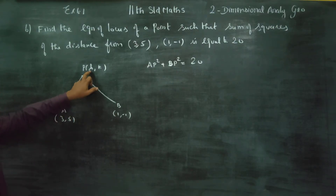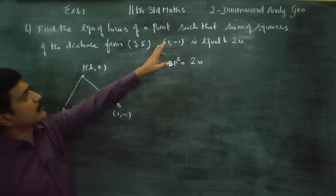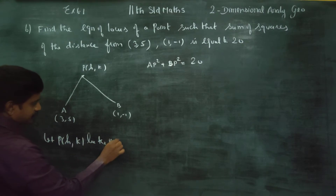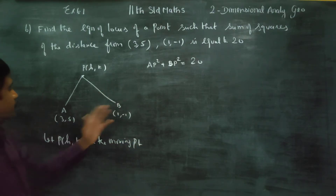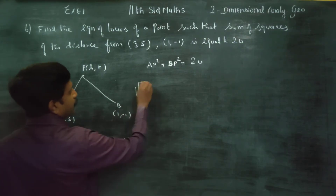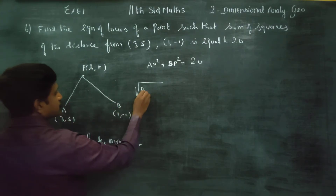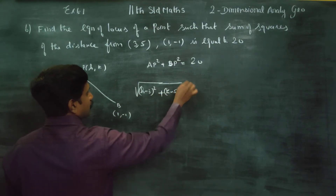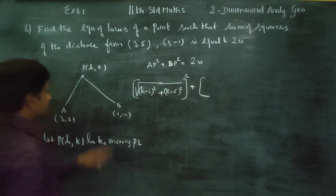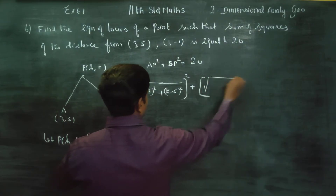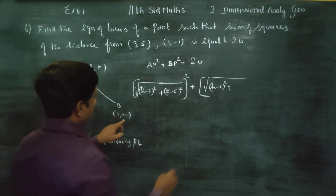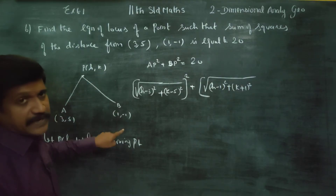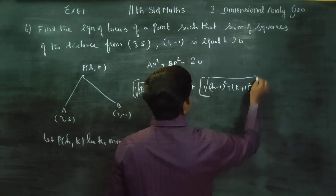So if you have a locus point (h,k), let P(h,k) be the moving point. The distance formula gives: (h minus 3)² plus (k minus 5)², plus (h minus 1)² plus (k plus 1)², using the formula x₂ minus x₁ all square plus y₂ minus y₁ all square. All square is equal to 20. Square root cancels.